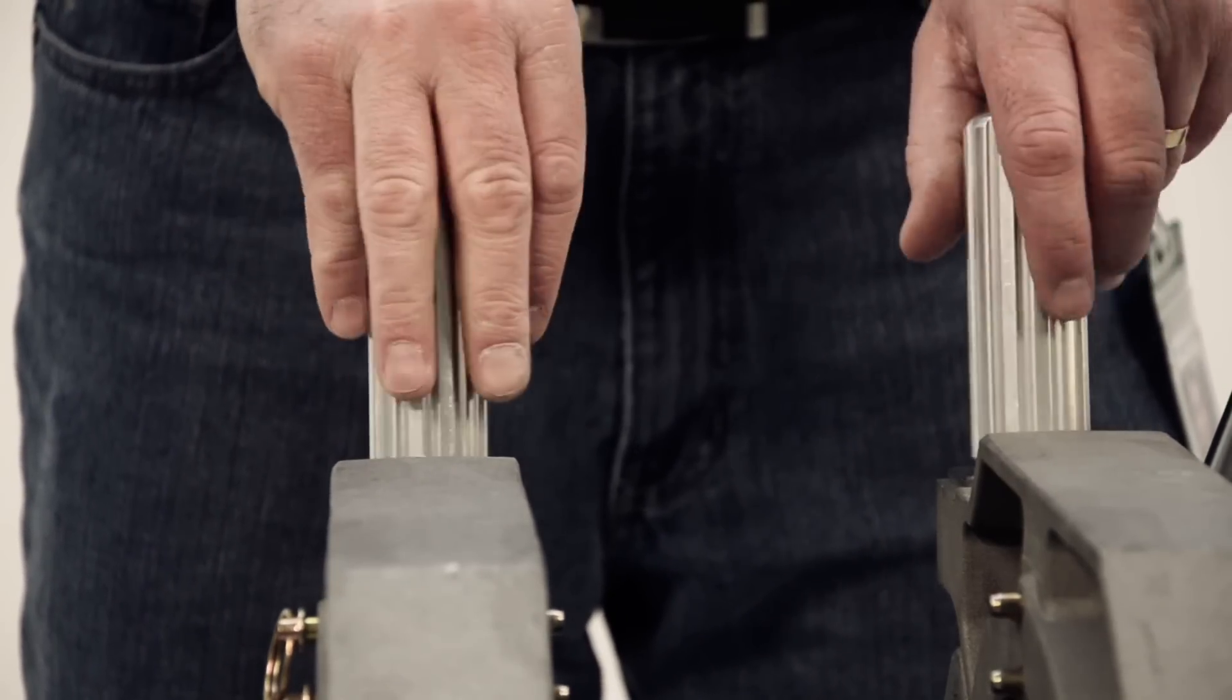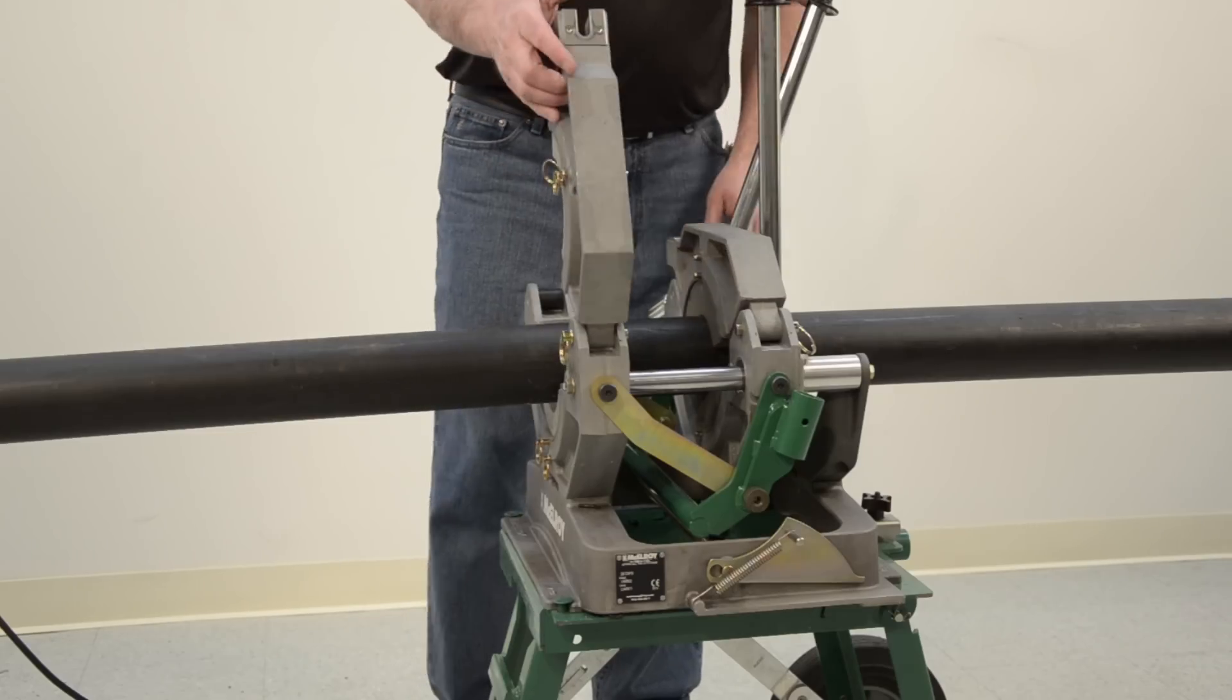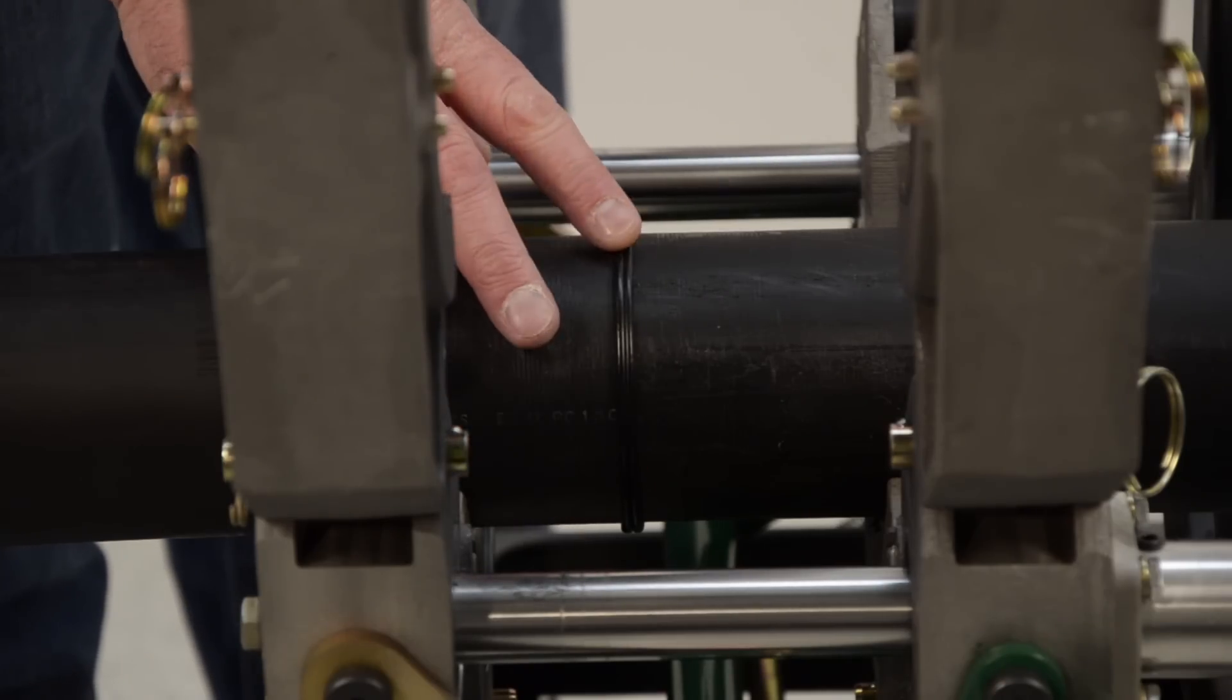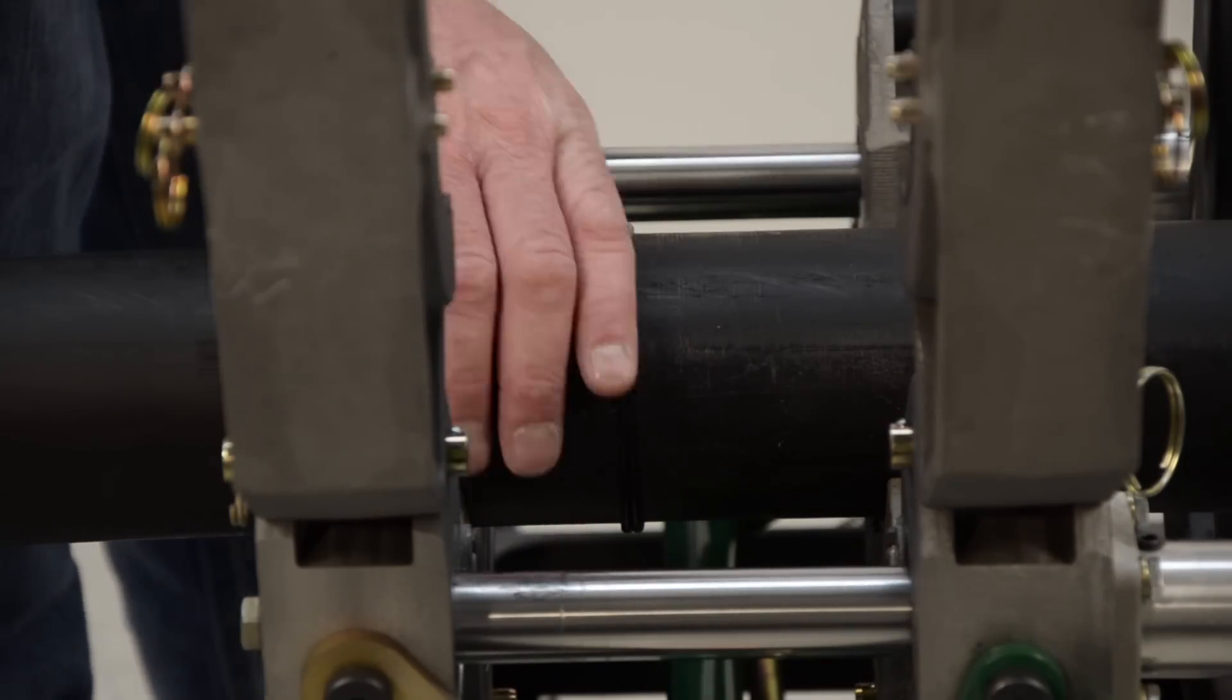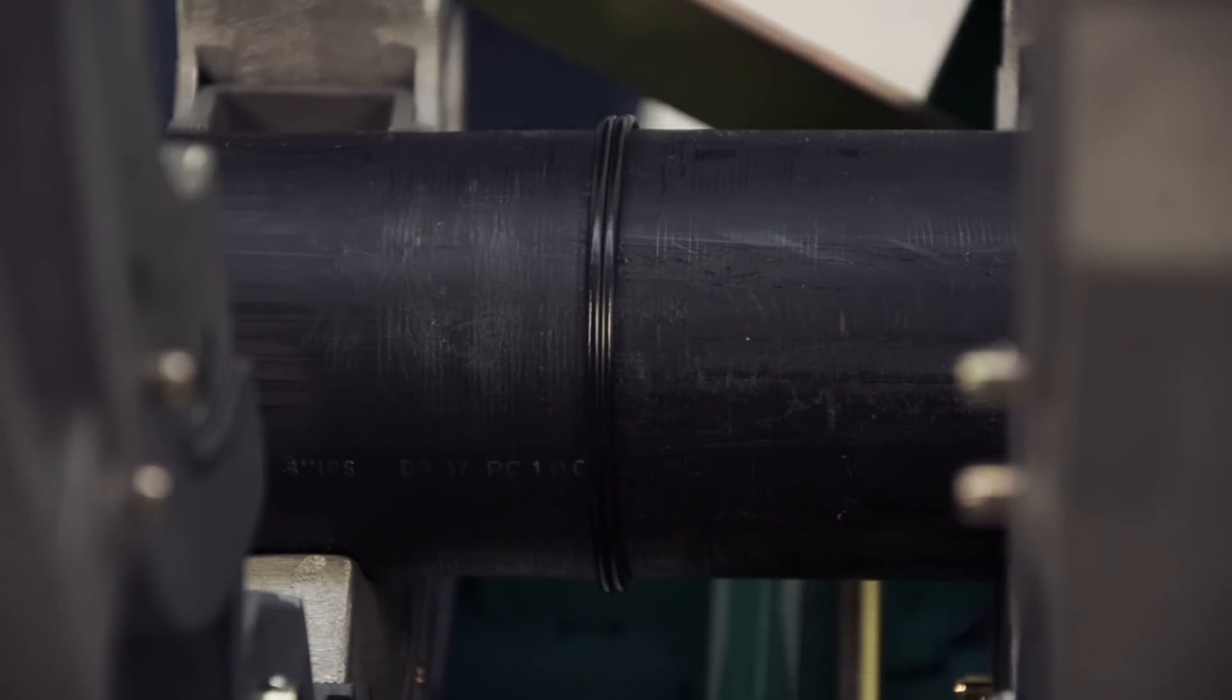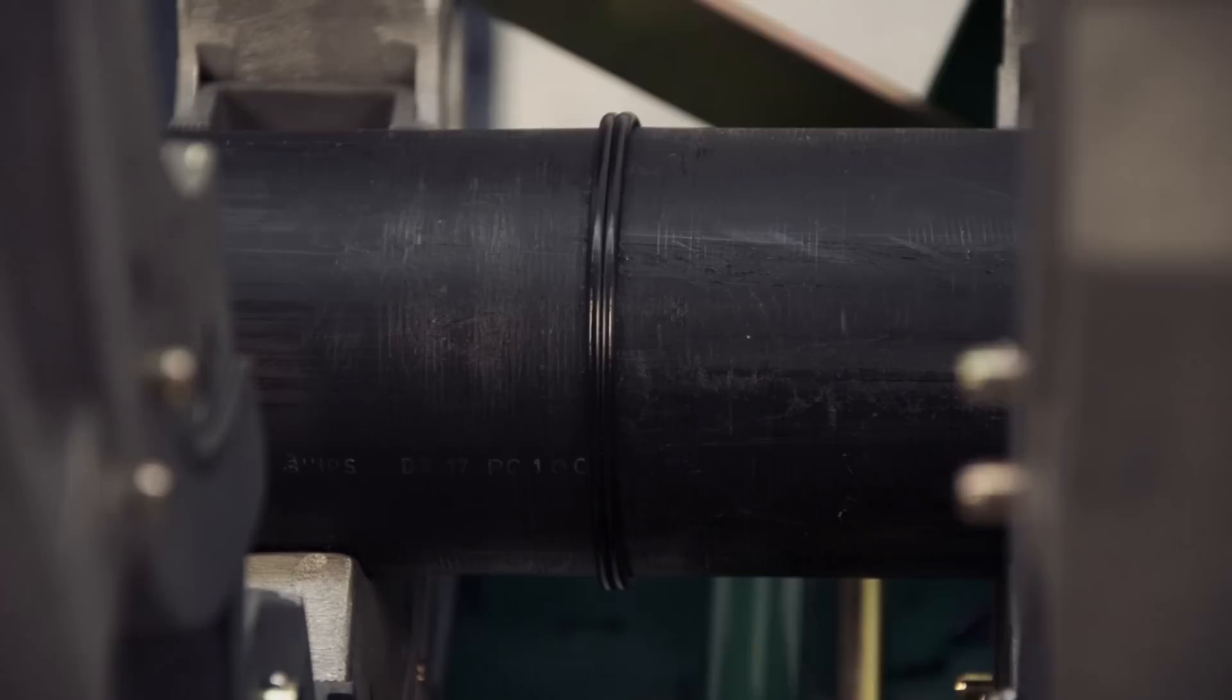Now we have one last step, inspecting the joint. A good joint will have a good double rollback bead with a uniform appearance on each side and the bead will have rolled back touching the pipe. Check for any debris or pitting in the joint. If all is well, move on to the next joint. A thorough visual inspection of the fusion will catch many of the potential problems. Here is what we are looking for.